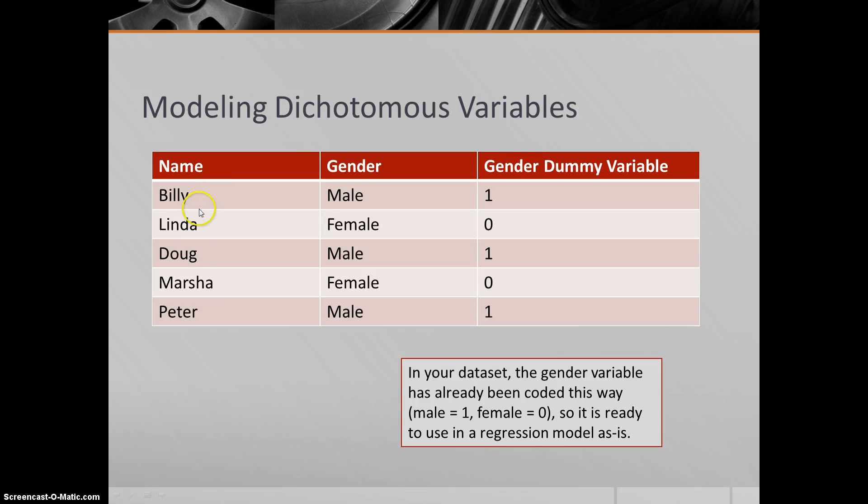What might this look like? Let's suppose we had five people: Billy, Linda, Doug, Marcia, and Peter. Their genders were male, female, male, female, male, respectively. The gender dummy variable would look like this - the males would have a one, the females would have a zero because the females are the reference group. Billy is male, he has a one. Linda is female, she has a zero. And so forth. Because it's already coded with zeros and ones - and this is what happens in the data sets I give to you, I typically use this coding scheme - you can go ahead and put this right into your analysis as is.